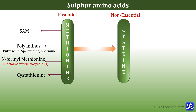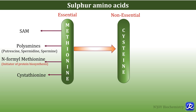The active form of methionine is S-adenosyl methionine, which is involved in the transmethylation reaction. Methionine is useful for synthesis of polyamines, and N-formyl methionine is the initiator of protein biosynthesis, which is also synthesized from methionine. Cystathionine is also synthesized from methionine.